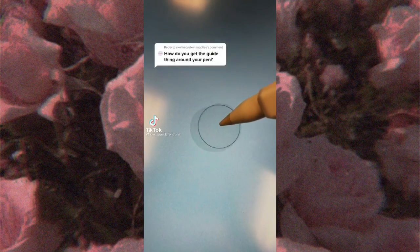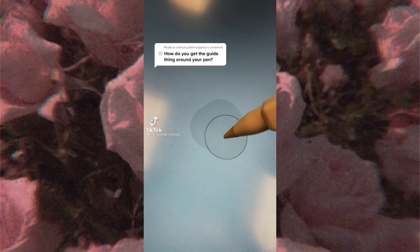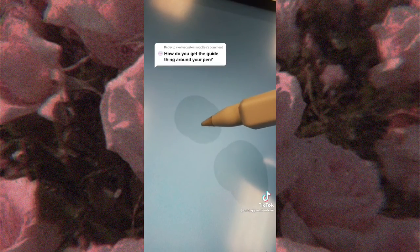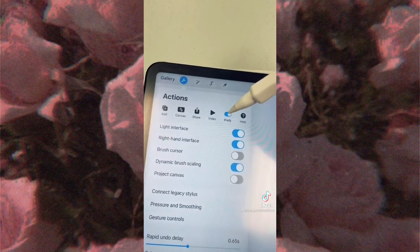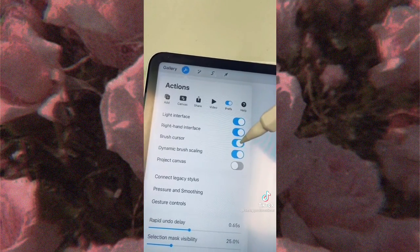If you use Procreate, you can actually have a guide around where your brush is. Let's get it so you can see the guide. Go to actions, go to preferences, and you're going to toggle on the brush cursor. So now you can see the edges of your brush whenever you're drawing.